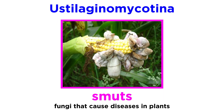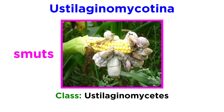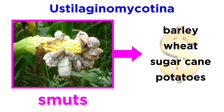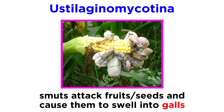Generally, fungi within this subphylum are known as smuts, or fungi that cause diseases in plants. These smuts fall into the class Eustilaginomycetes, then the order Eustilaginales. These fungi mainly infect plants in the Poaceae family, also known as the grass family. This means that some smuts can adversely affect economically important cash crops such as barley, wheat, sugarcane, or potatoes. Smuts attack plant fruits and seeds, causing them to swell into structures called galls.